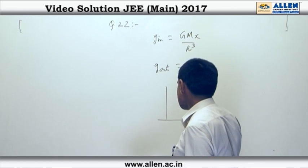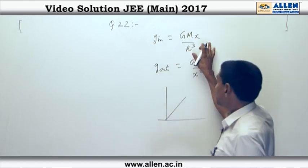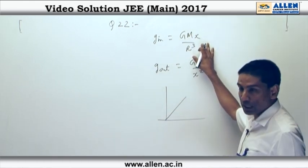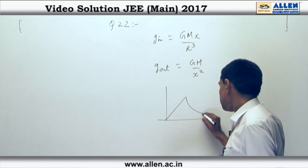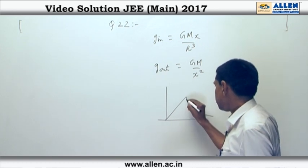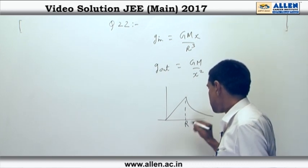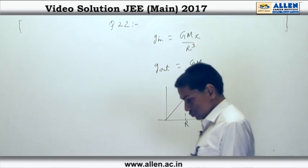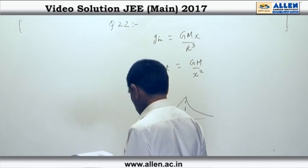The graph for this will be a straight line till a distance of R, and after that the graph will curve down like this — this is capital R. So the answer is option 2.